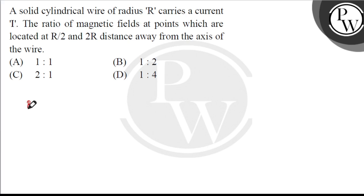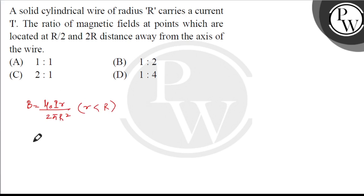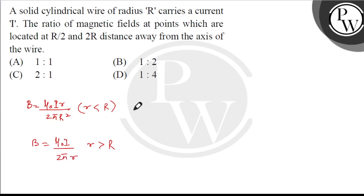The magnetic field inside the wire (r less than capital R) is given by B = μ₀Ir / 2πR². When r is greater than capital R, B = μ₀I / 2πr. Now we will substitute values — in the first case, we put r = R/2.